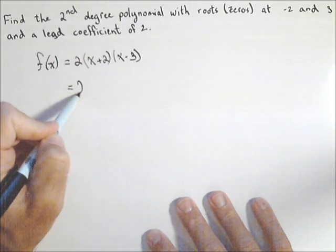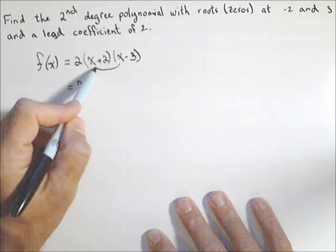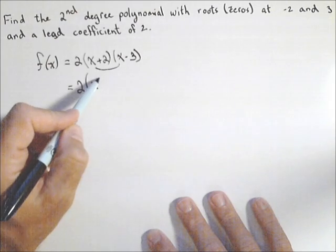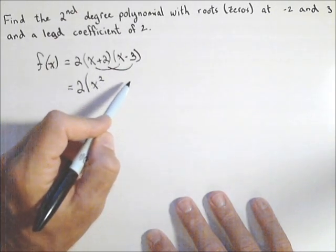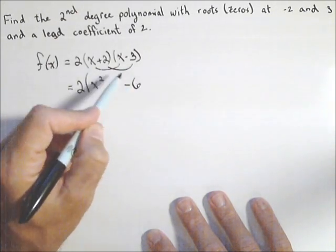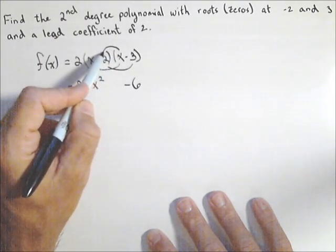If we wanted to multiply it out, we could FOIL. So x times x gives us x squared, two times negative three gives us negative six, and then on the inside we have a positive two x.